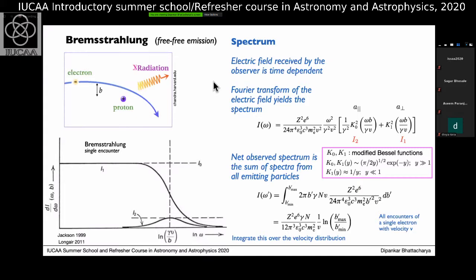The first process I'm going to talk about is called Bremsstrahlung, or free-free emission. In an ionized plasma, you have protons and electrons, and when an electron passes by a proton, the Coulomb field of the proton will accelerate the electron, and this acceleration will cause the electron to radiate. This radiation is normally known as Bremsstrahlung. Since the electron is not bound to the proton either before or after the encounter, in astronomy we also refer to this as free-free emission.